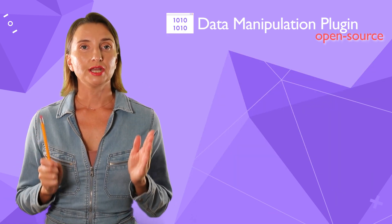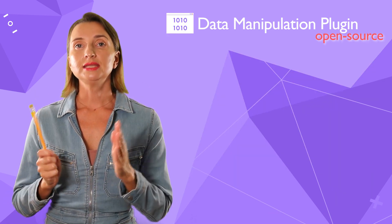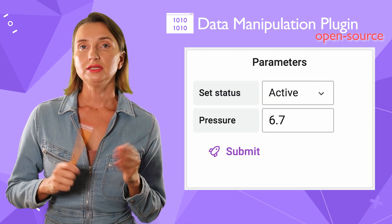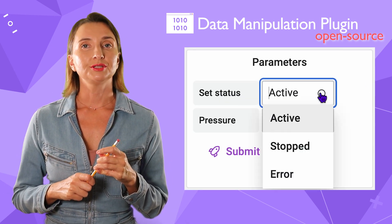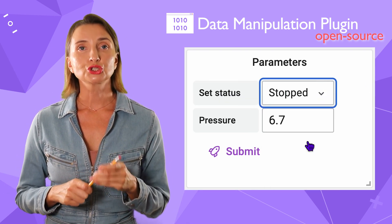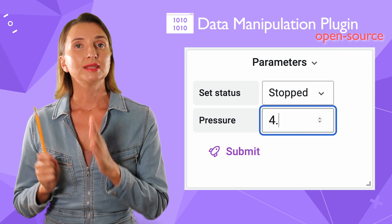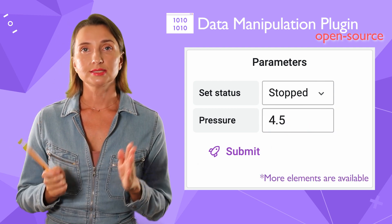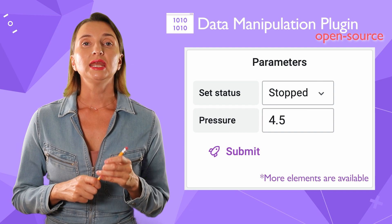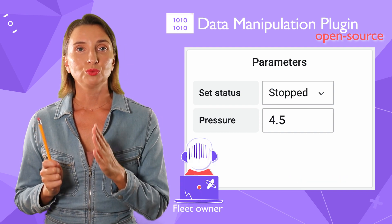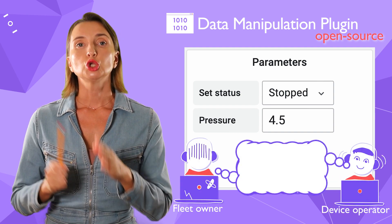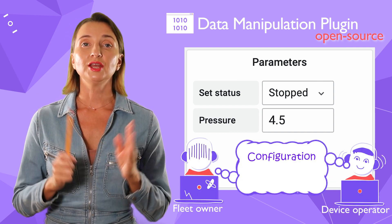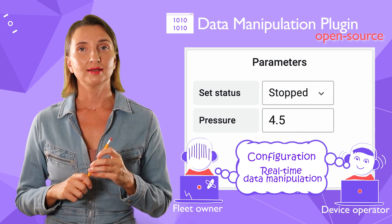To operate, you might consider the data manipulation plugin. The idea of this plugin is to allow Grafana dashboard users to insert and update the backend data. In practice, the data manipulation plugin enables fleet owners and device operators to configure production processes and provide real-time feedback.